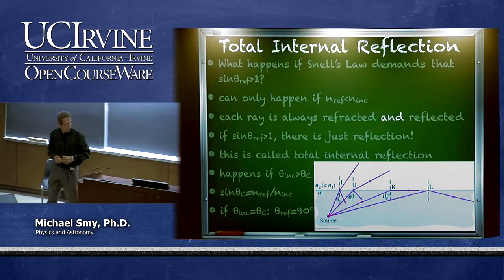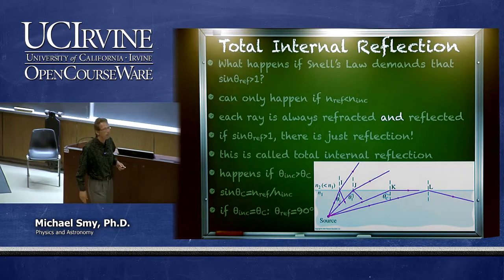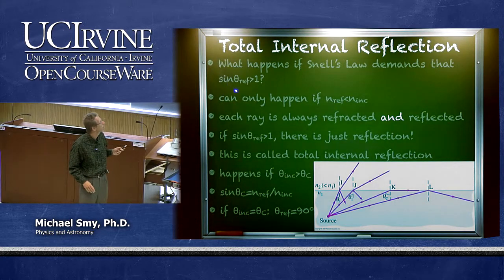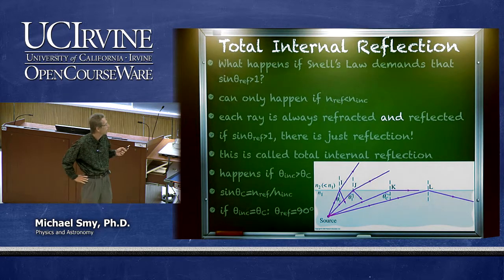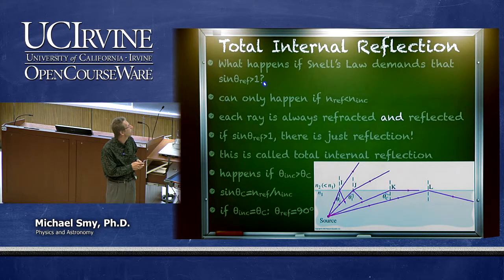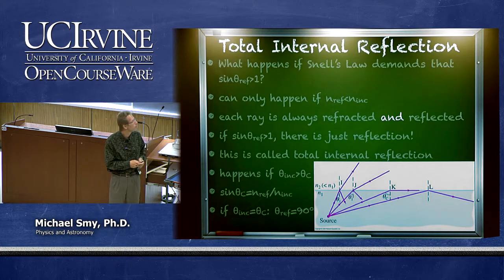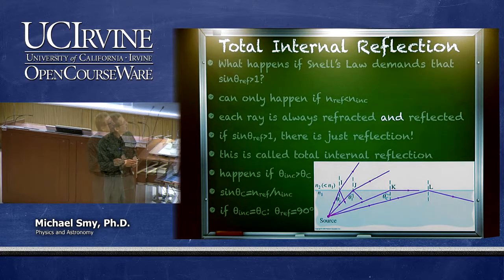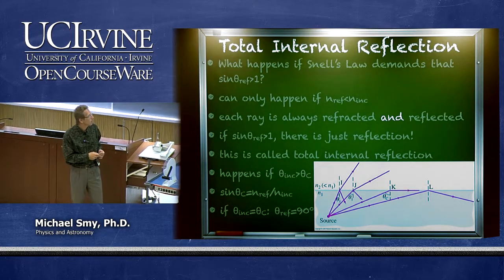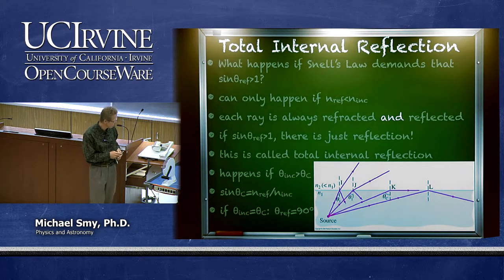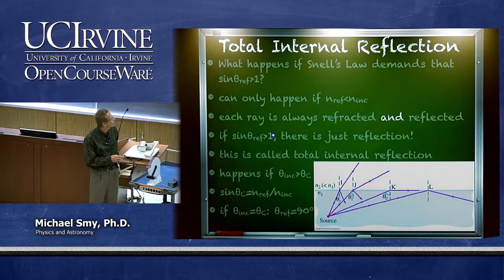Let's now discuss a new phenomenon. What happens if Snell's law demands that the sine of the refracted angle is greater than one? This is impossible for any real angle and can only occur when going from a more optically dense medium to a less dense one — for example, from water into air. Whenever we have refraction, we also have a reflected ray accompanying the refracted ray. If the condition sine theta_refracted greater than one is met, there is only reflection — total internal reflection.